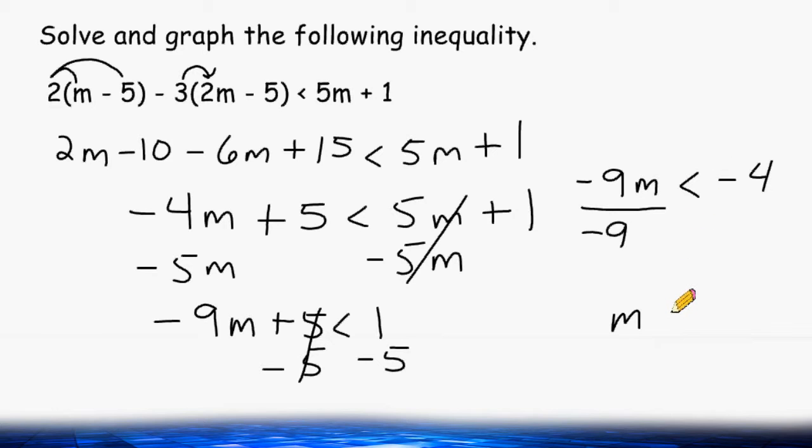So we have to change this less than symbol to a greater than symbol. And we also have to divide the other side by negative 9 as well. Whenever you divide a negative by a negative, the result will always be positive. And because what we see here just looks like a normal fraction, we just write it as if it were a regular fraction.